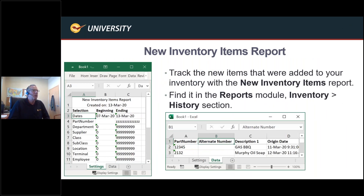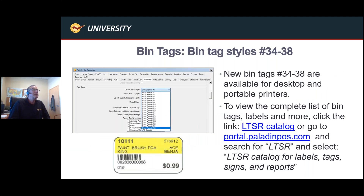Moving on to the New Inventory Items report — it lets you produce a historical report for all new inventory items. For example, a report from March 7th to March 13th showing different part numbers received in that period. It's a good report that lots of people find very useful. For Bintags, we've added multiple different styles. Go to the LTSR catalog in your Paladin web portal and help portal — LTSR is the search term. Click on Catalog and there's a 40-to-50-page document showing every single Bintag tag style, shelf tags, item tags, sales tags, sales signs, reports, and more.